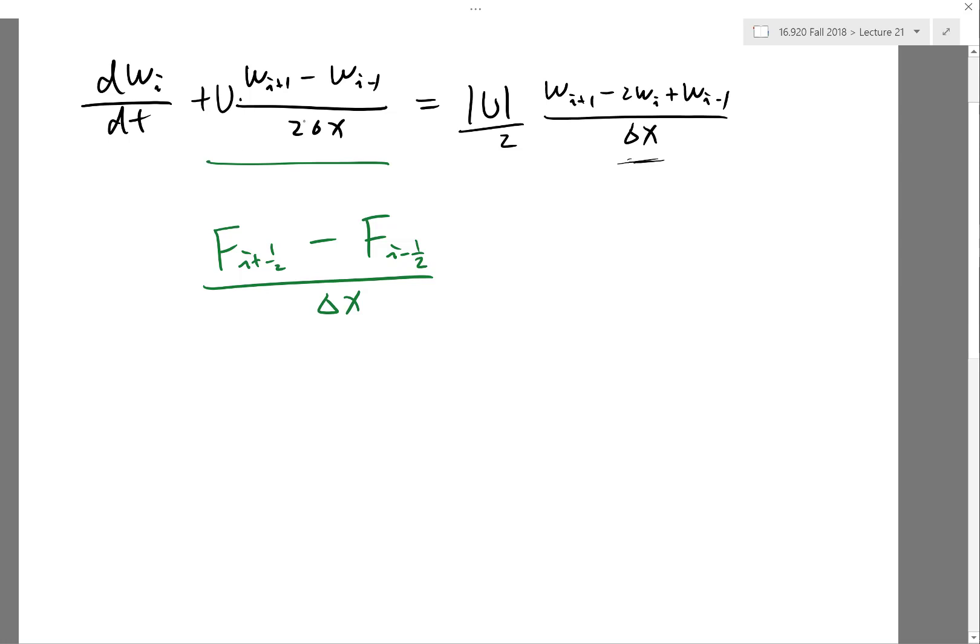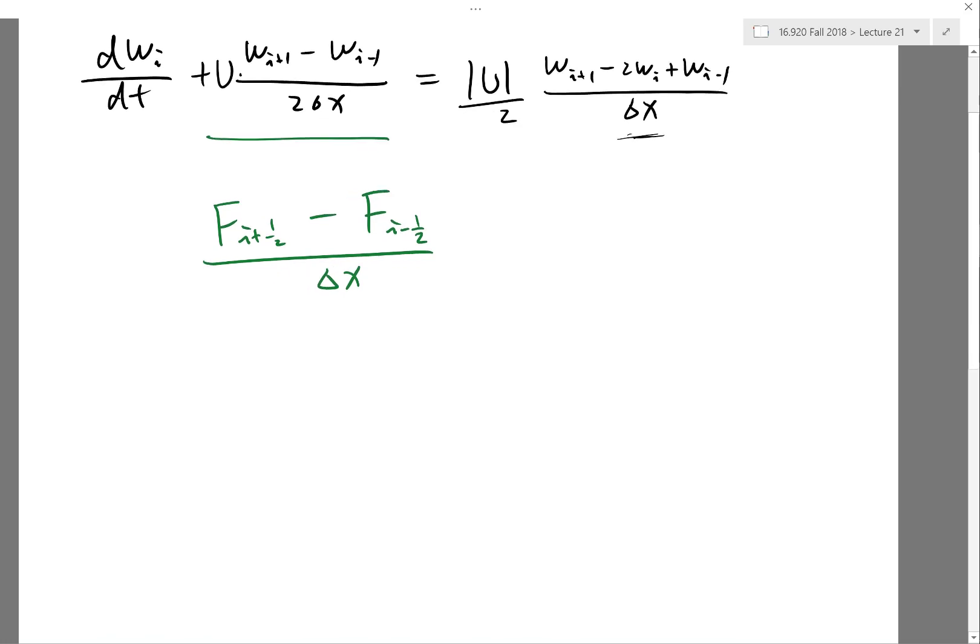What's more important is that fᵢ₊₁/₂ has to be the same seen from the i-th grid point and i+1-th grid point. You can actually easily achieve this by organizing things around.